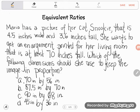Maria has a picture of her cat Snooki that is 4.5 inches wide and 3.6 inches tall. Let's draw a little picture of this. So Snooki, oh Snooki. Let's see. Snooki's picture is a little longer, 4.5 inches, than it is wide, 3.6 inches.